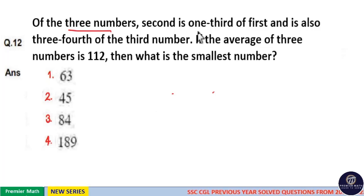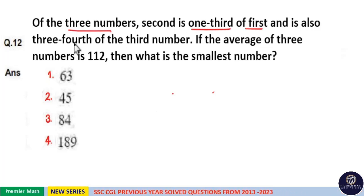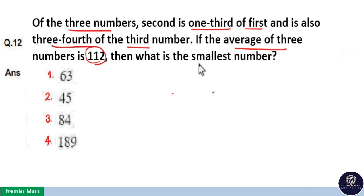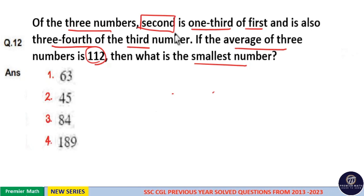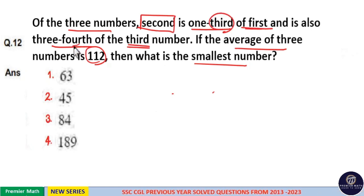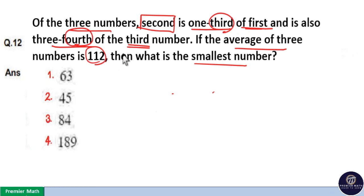Of the three numbers, the second is one third of the first and is also three fourth of the third number. If the average of the three numbers is 112, then what is the smallest number? Here the second number is in relation to both the first and third numbers. Second is one third of first and three fourth of the third number.